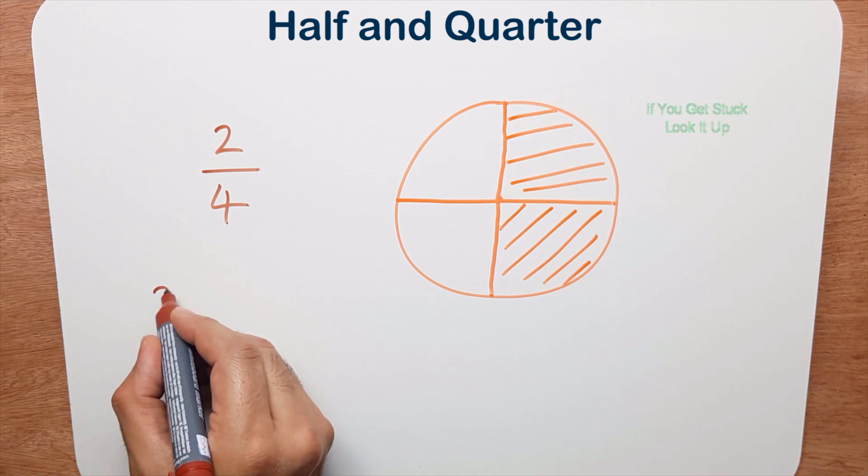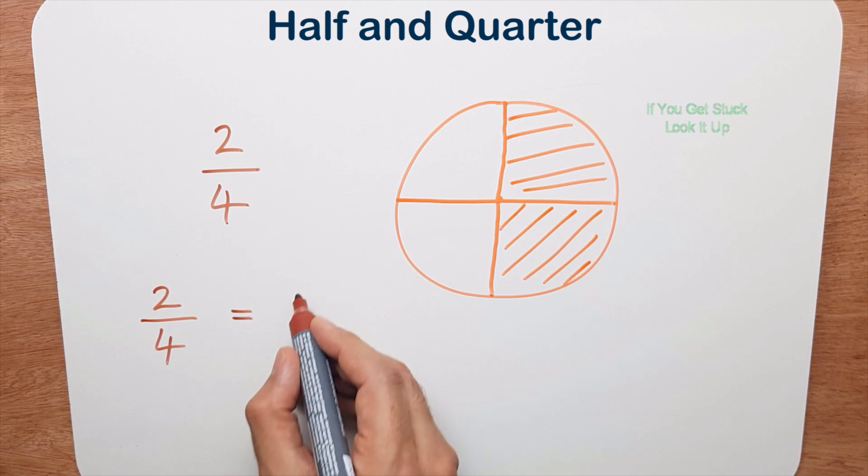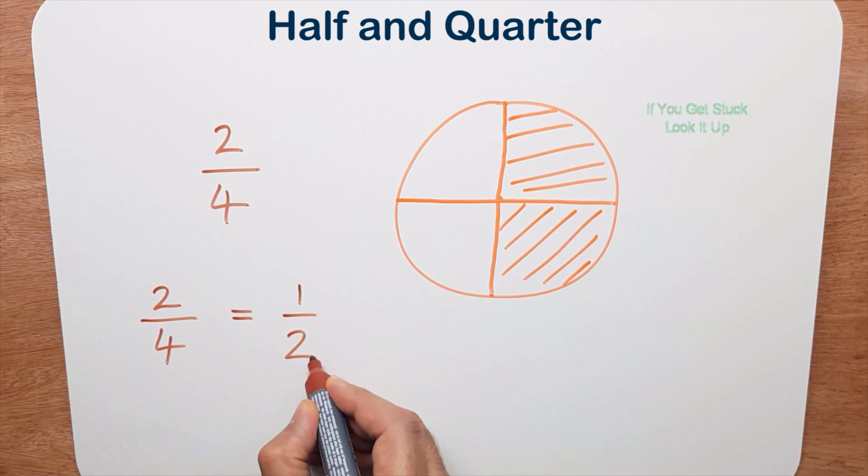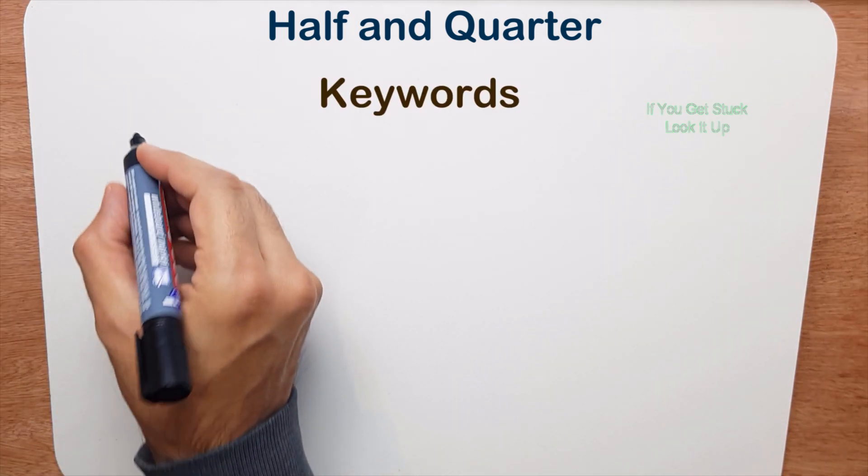So I can say two quarters is the same as or equal to one half. So I want you to pay attention to that. Those are called equivalent fractions and we'll come back to those.